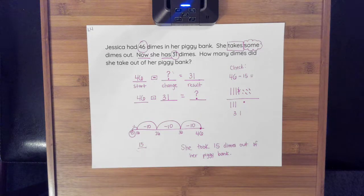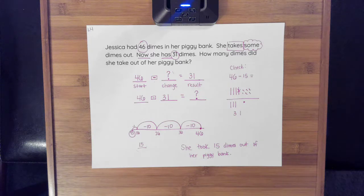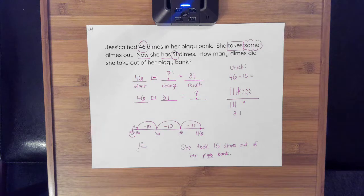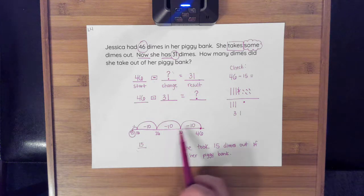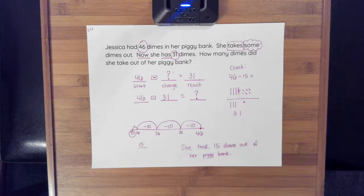So that is how I would solve the change unknown word problem. Make sure to check and double check that when you're drawing or doing your number line, you're not leaving any gaps from number to number and that you're not miscounting how many you're taking away.